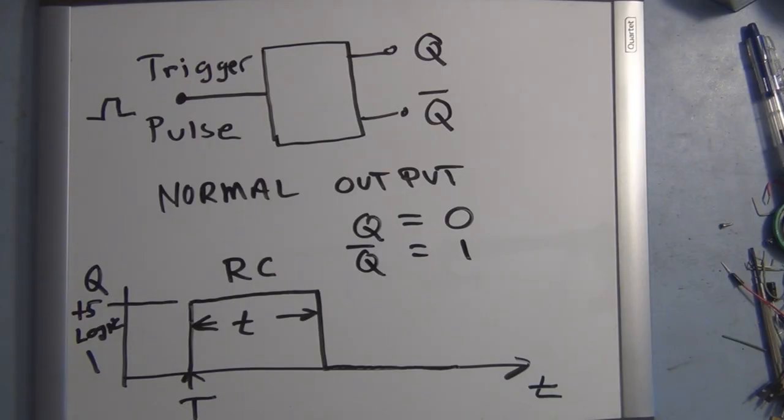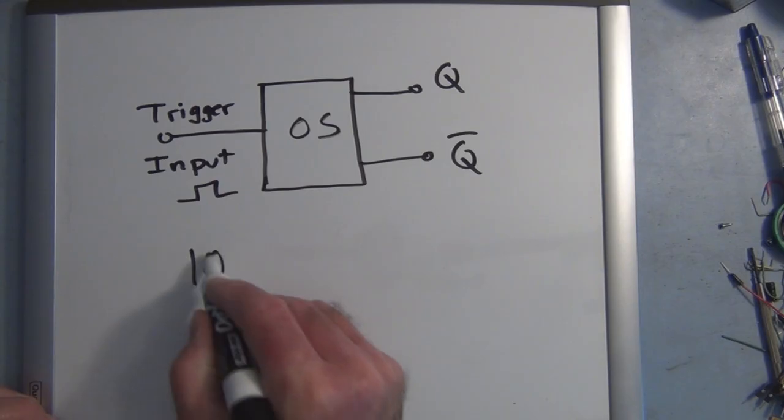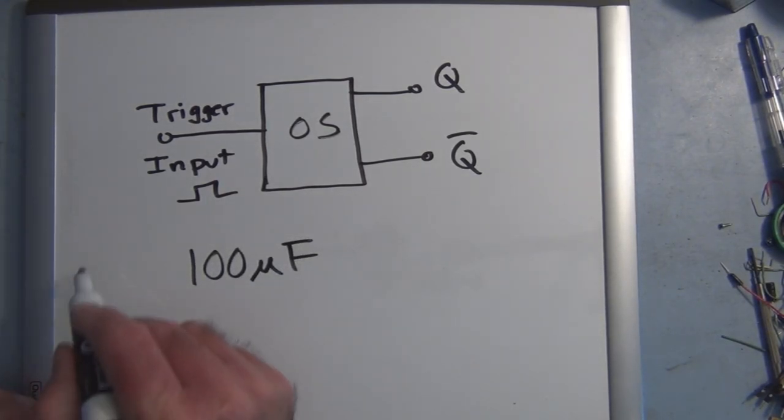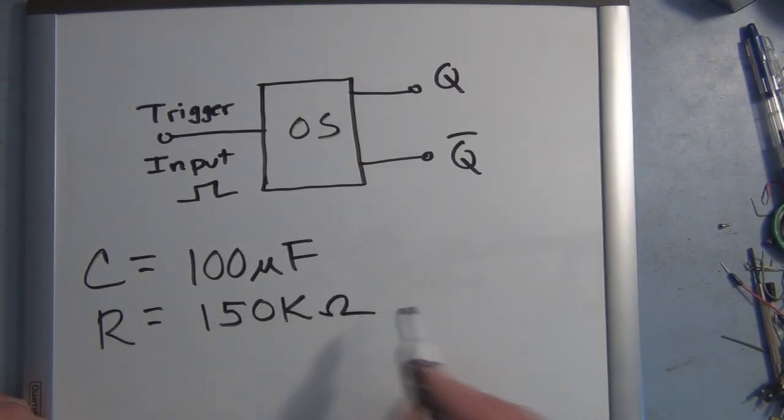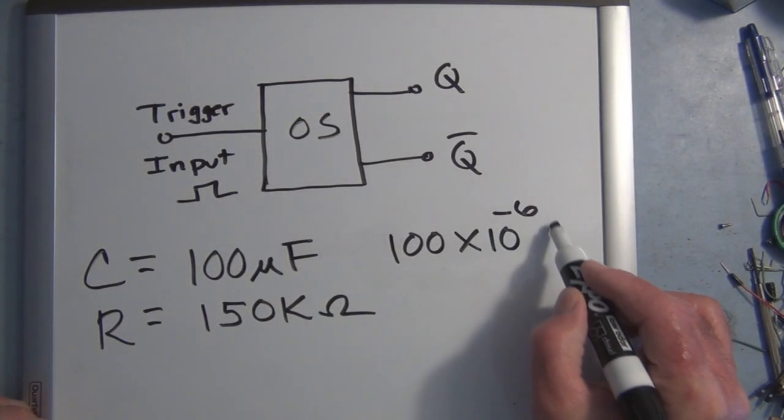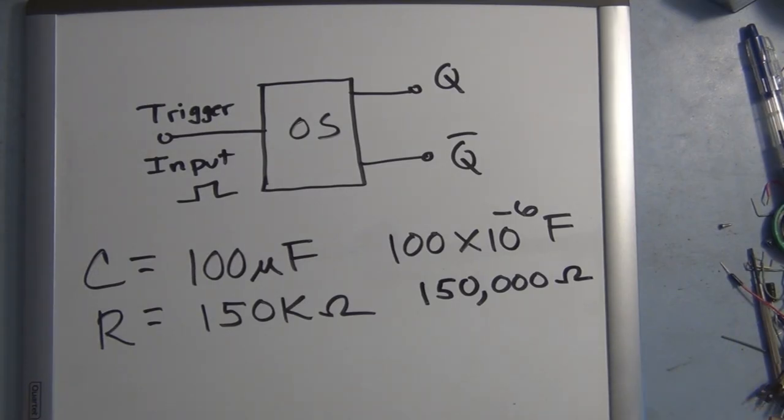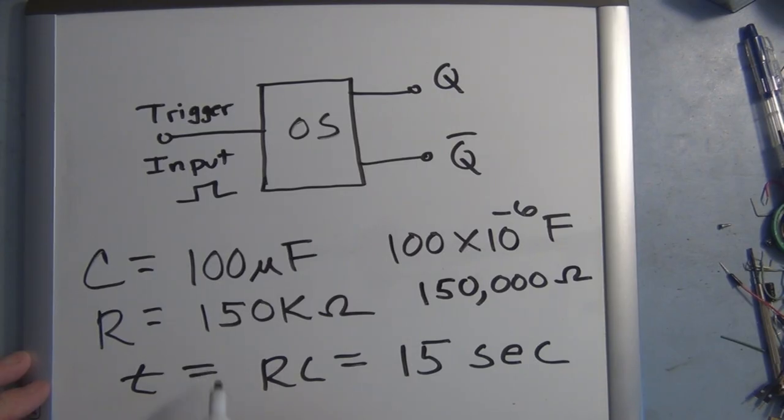Until it is triggered again. So this period of time here is the RC time constant, and this is the one shot abbreviated OS. So I've added a one shot to the binary counter I built in a previous video. What I've added is a 100 microfarad capacitor, so C equals 100 microfarads.